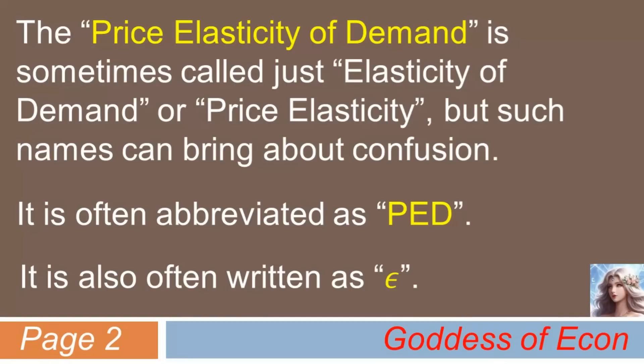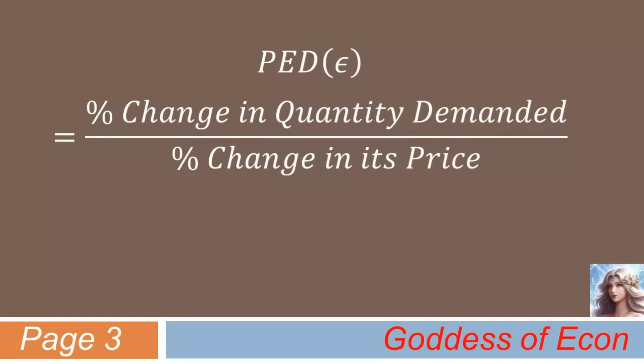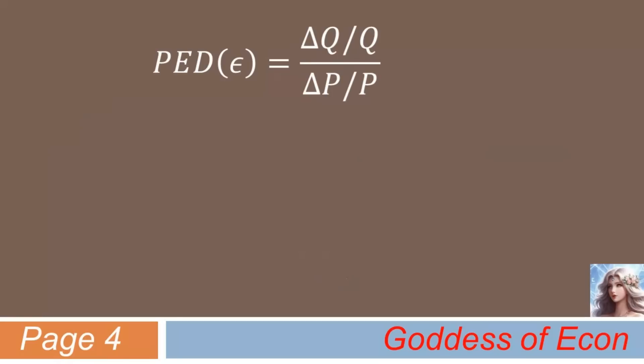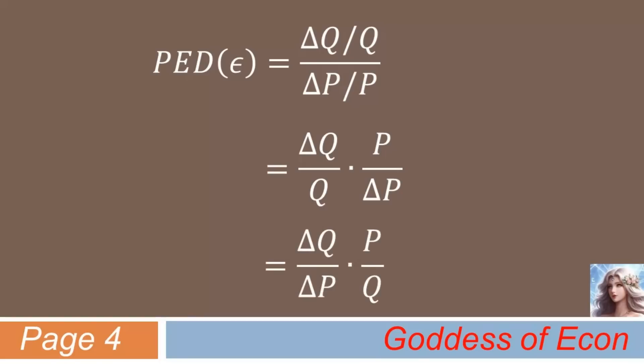How is PED mathematically defined? It is defined as the percentage change in the quantity demanded over the percentage change in its price. The numerator represents the change in quantity that is due to the change in the good's price. It can also be written as delta Q over Q, divided by delta P over P. This can be rewritten as delta Q over Q times P over delta P, and further simplified to delta Q over delta P times P over Q. This is the mathematical expression for PED you would normally see in economics textbooks.